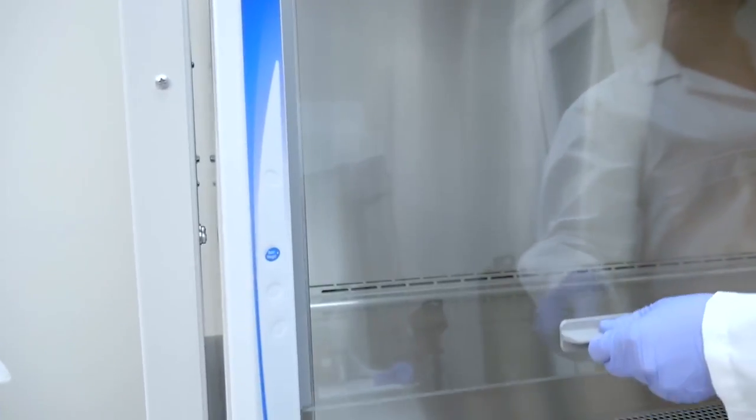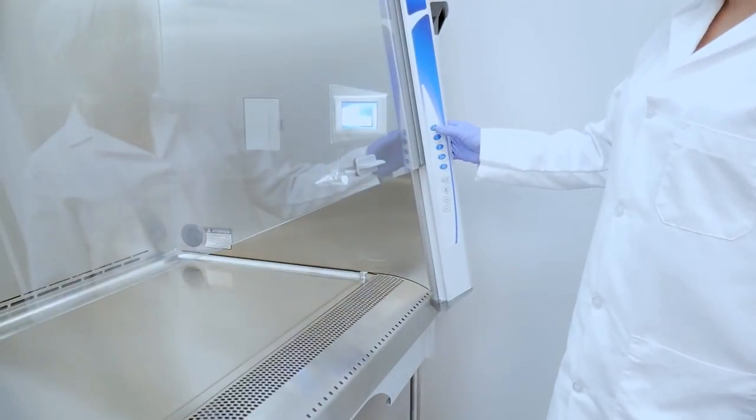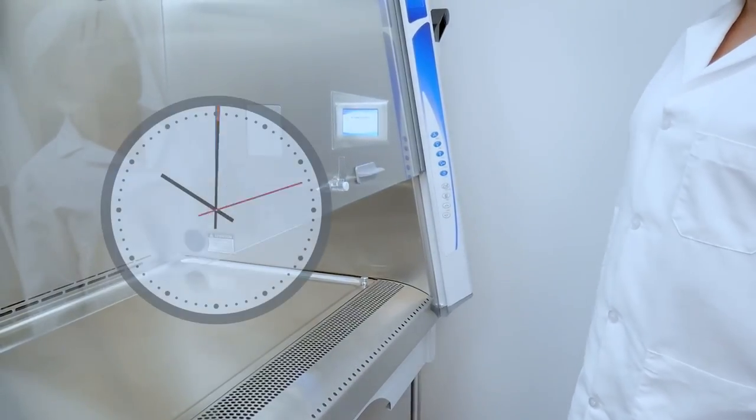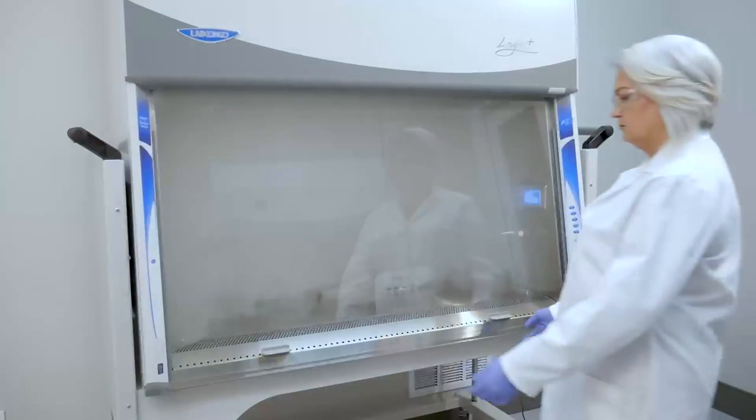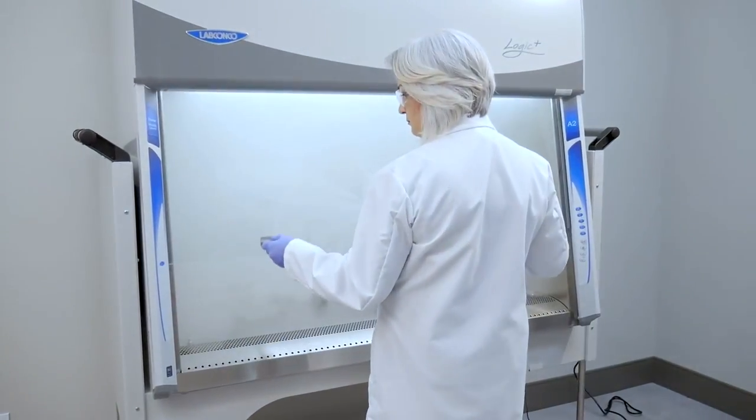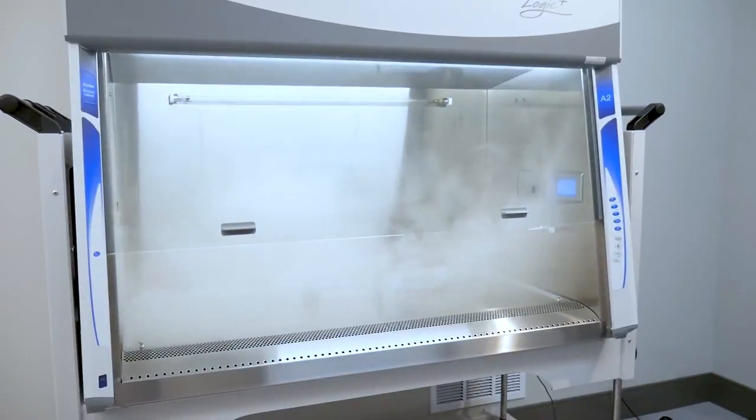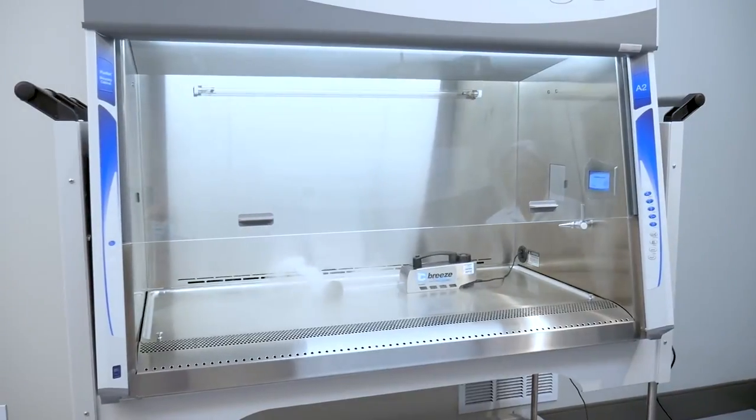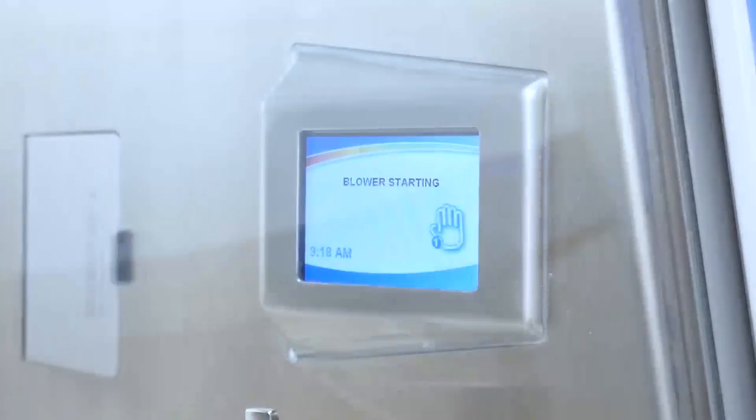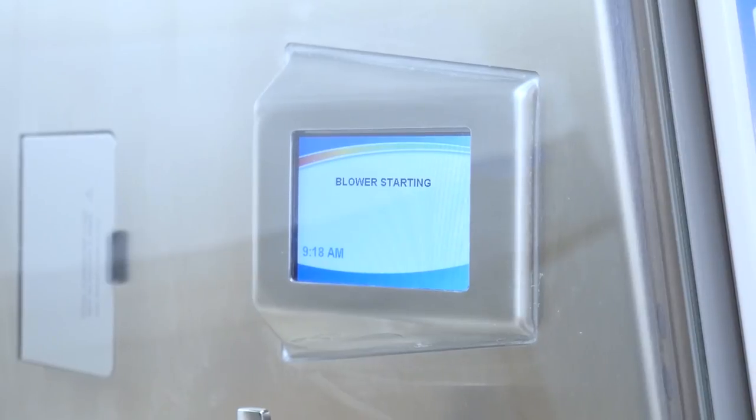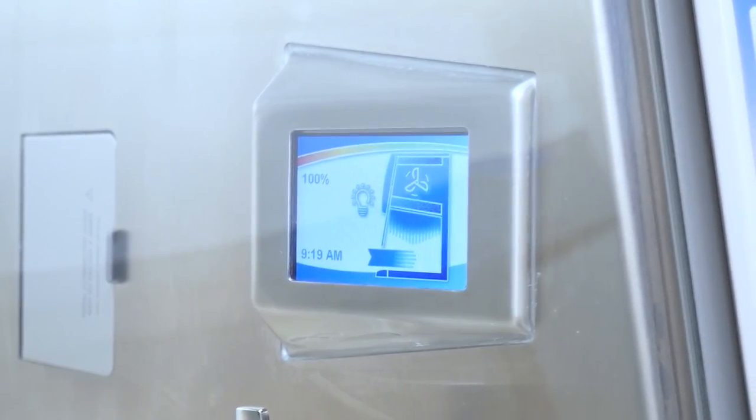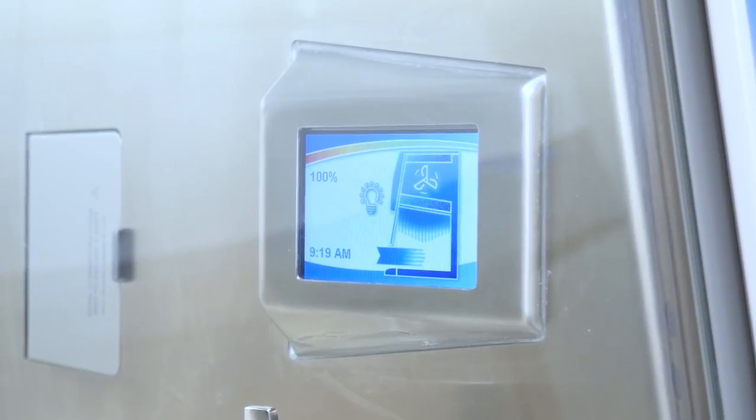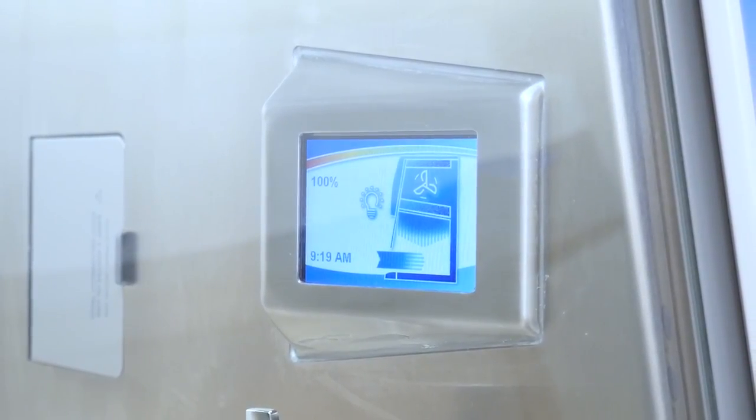Next, raise the sash to the proper working height, then turn on the cabinet's light and internal blower and allow the system to equilibrate and purge out any contaminants for a minimum of five minutes. If the cabinet's smart start feature is enabled, the cabinet blower and light will automatically turn on. As the BSC starts up, a please wait screen will be displayed while the blower is equilibrating. Once this period completes, check that the cabinet's HEPA filter life is sufficient and that no other alarms are present.